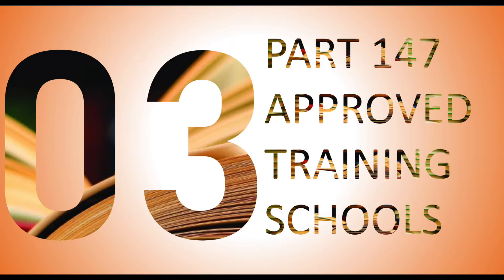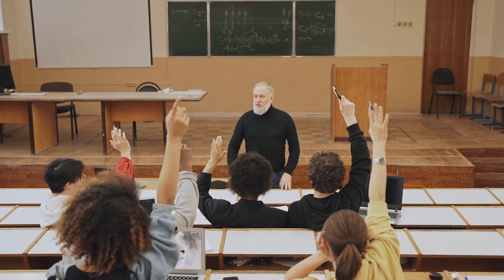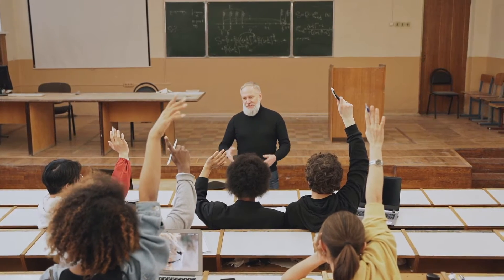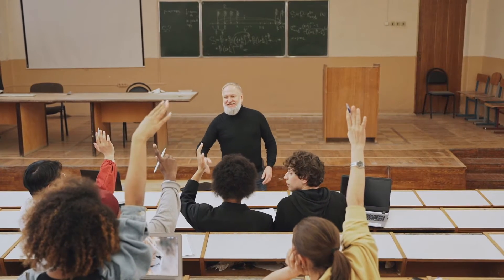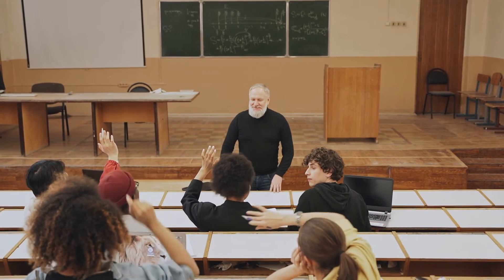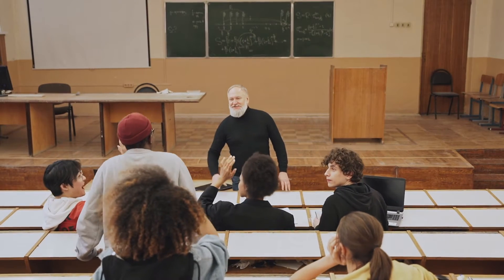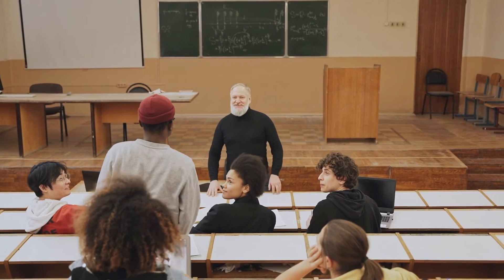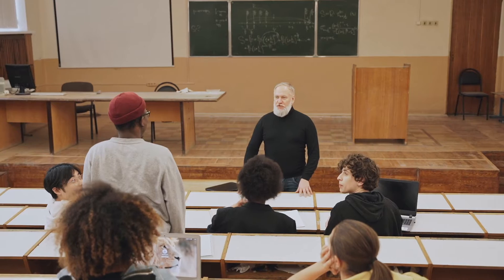We have competent people and a fully functional aircraft — but where do we train these people? We need to go to an approved training school. This is called a Part 147 approved training school. There are also other training programs such as Part 66 modular programs, but we won't cover those in this video. Part 147 has all the requirements written for what you need to set up such a school.